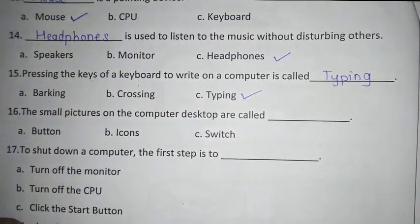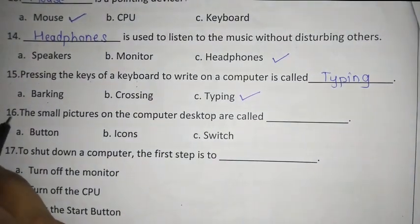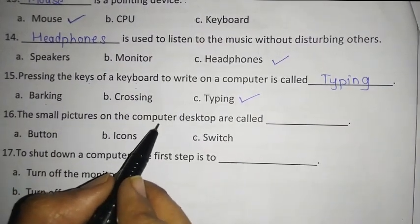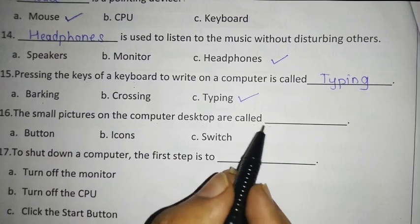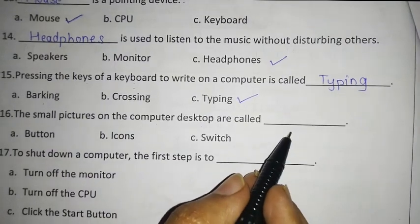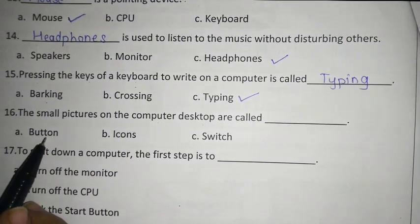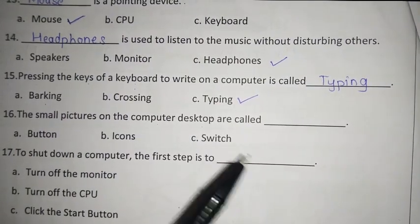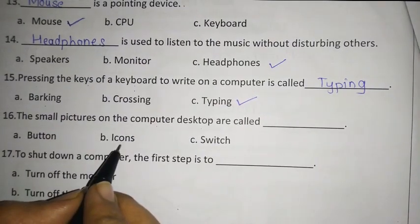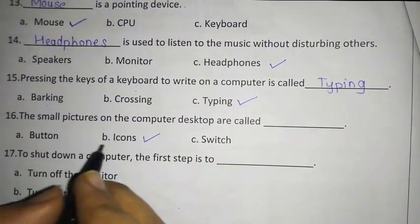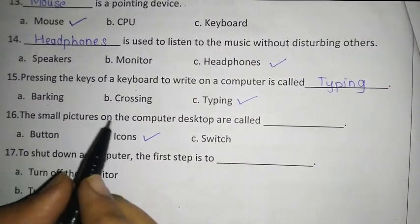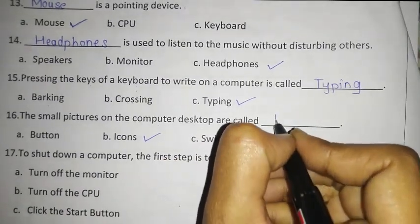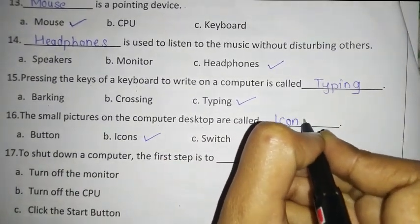Now sixteenth question: The small pictures on the computer desktop are called dash — are they called buttons? No. Switch? No. Then icons? Yes. So what are the small pictures on the computer desktop called? Icons. Right here: icons.